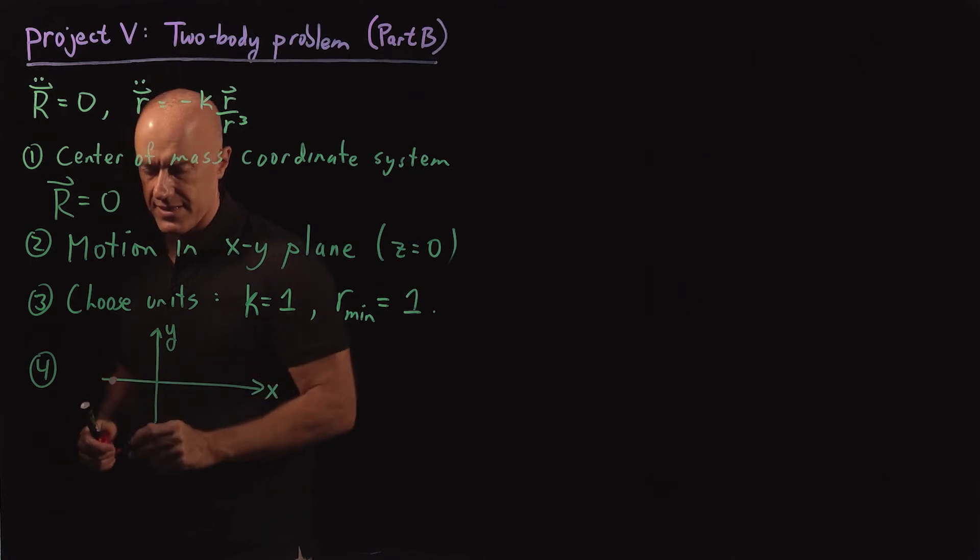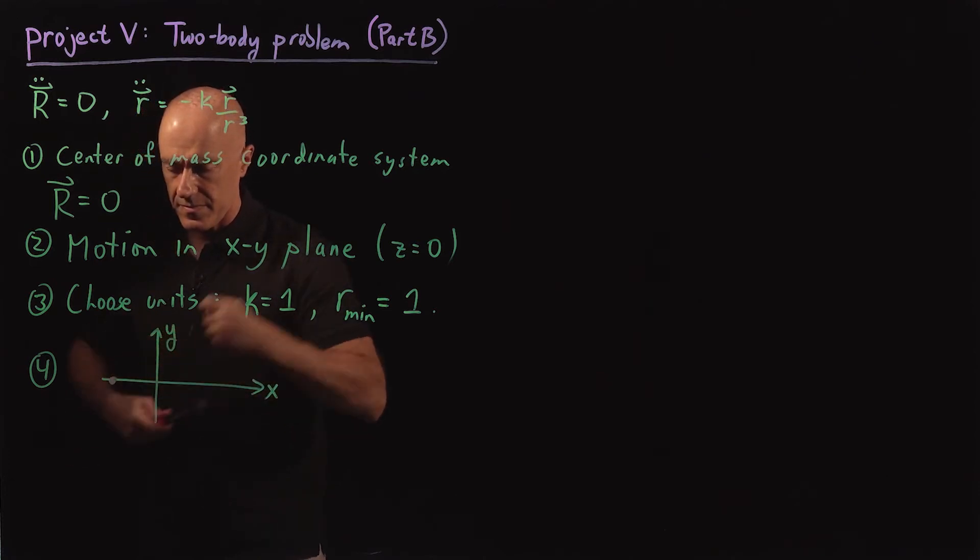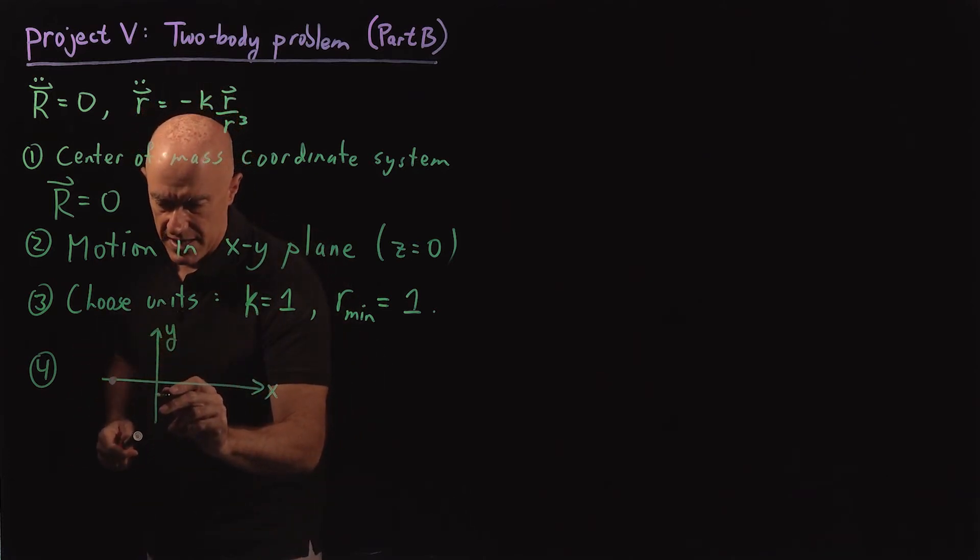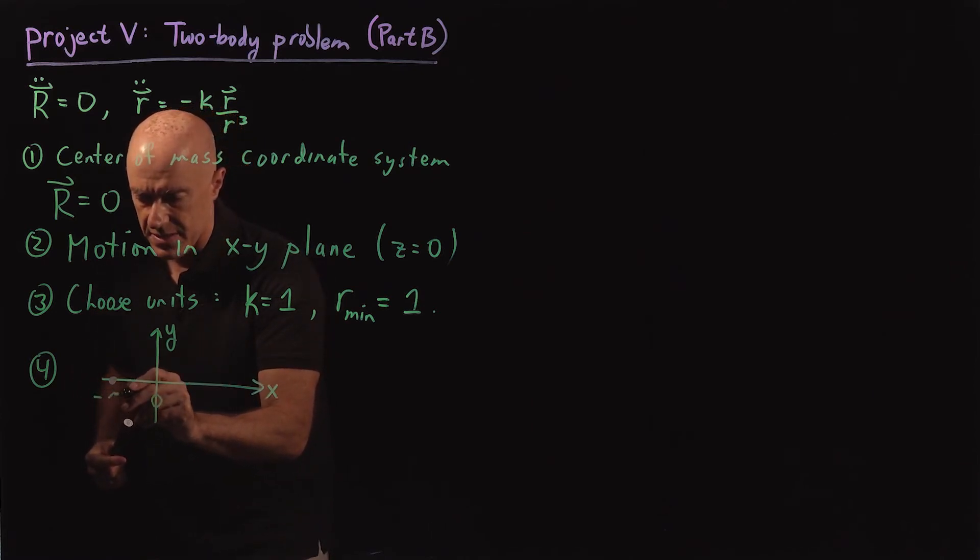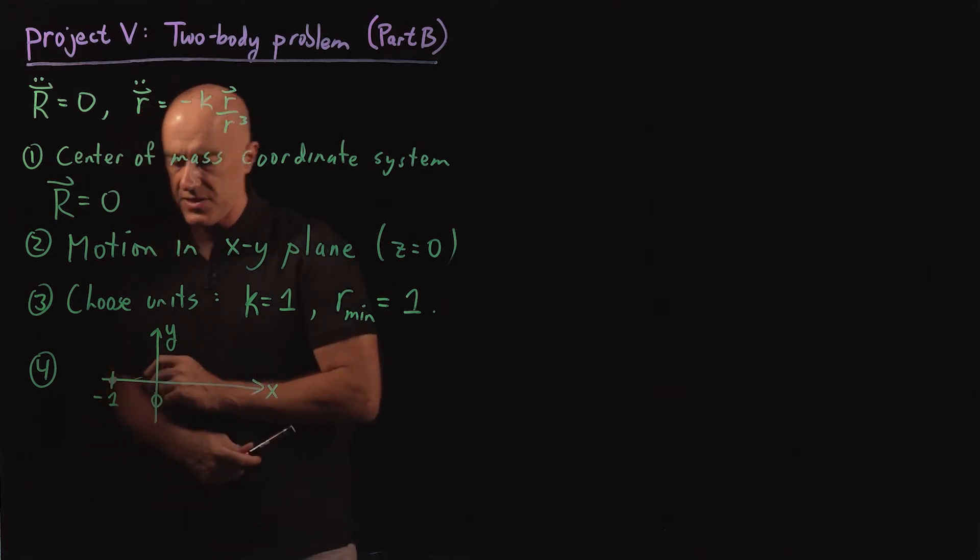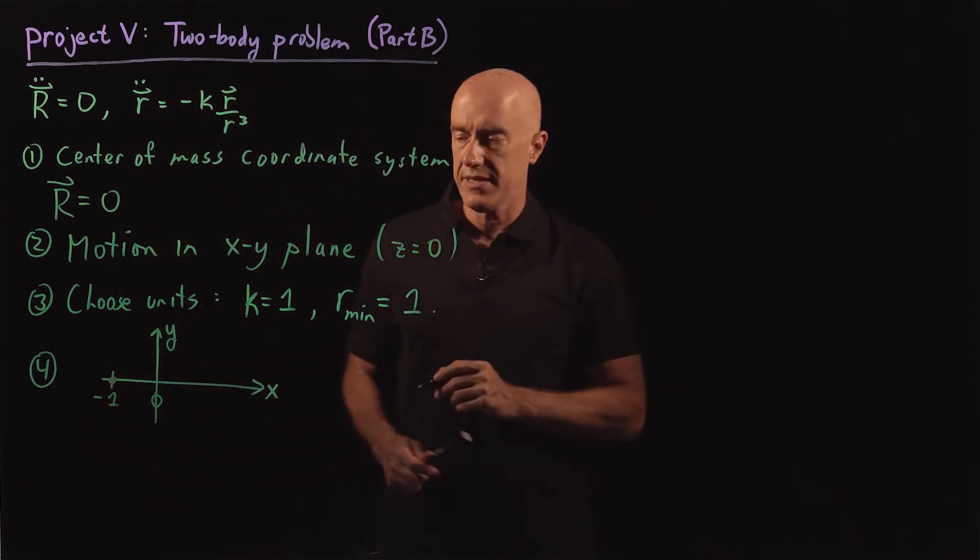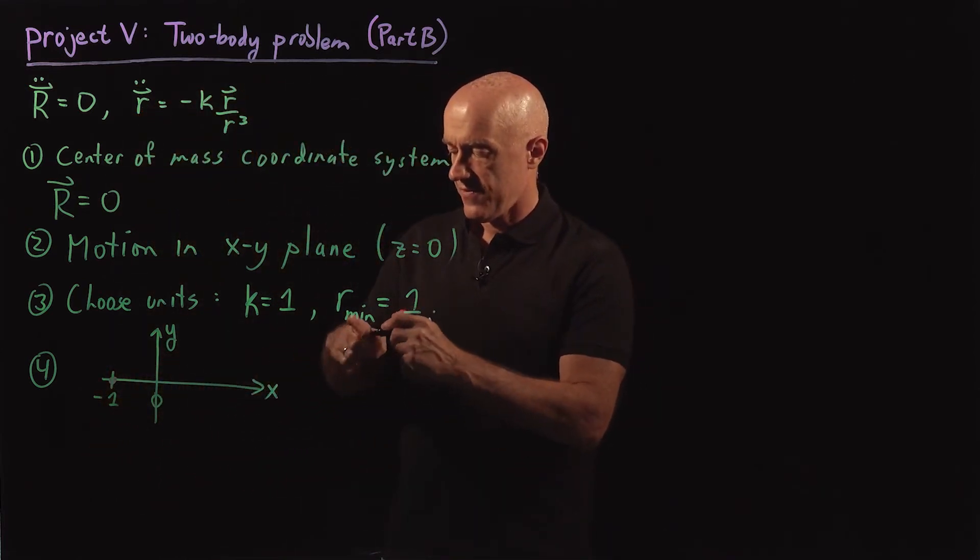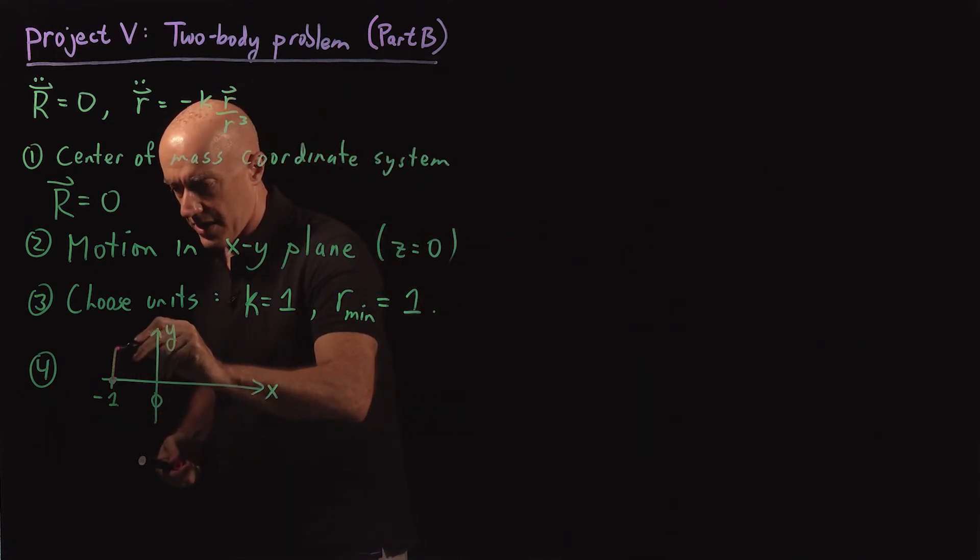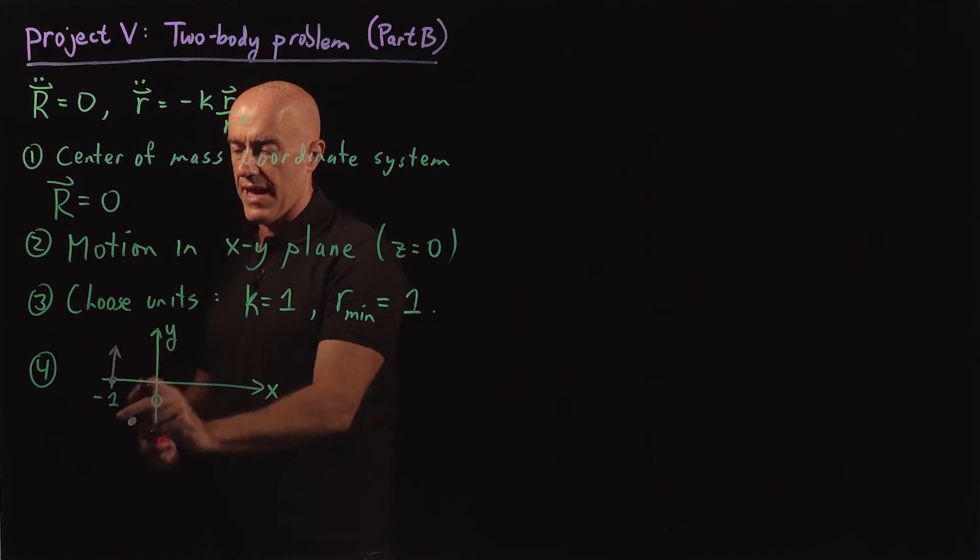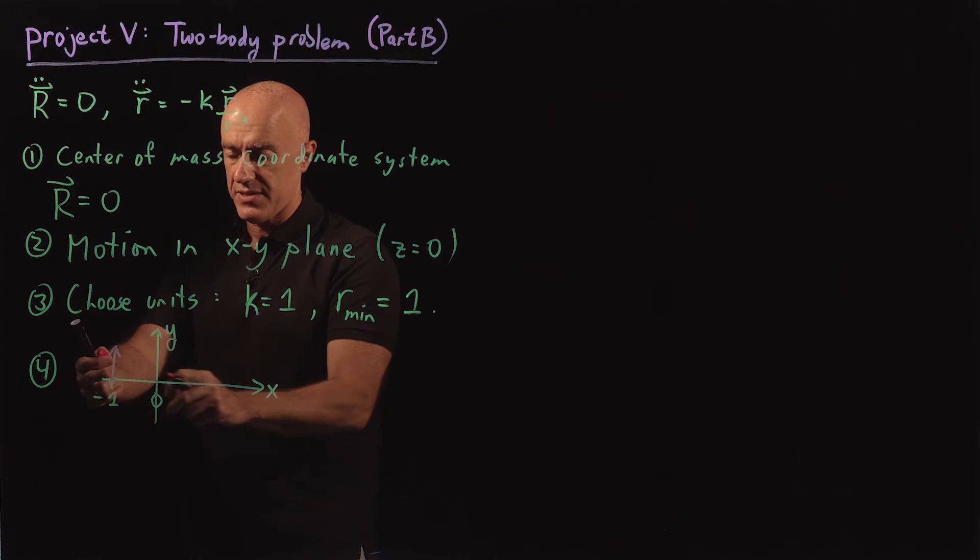So this will be zero here. This is going to be the minimum distance. So this will be minus one in this coordinate system. And the velocity vector is going to be parallel to y. So the mass is going to be moving upward when it's at its minimum distance to the origin. Minimum distance to the origin.